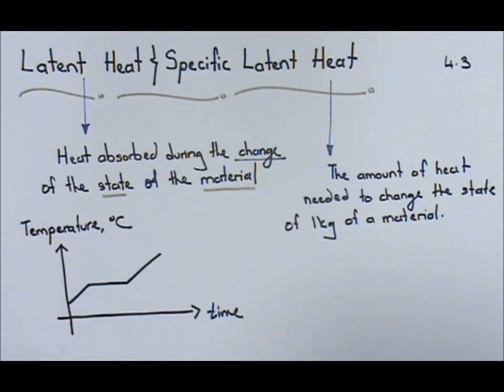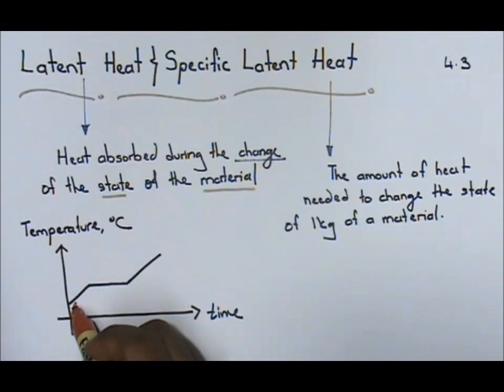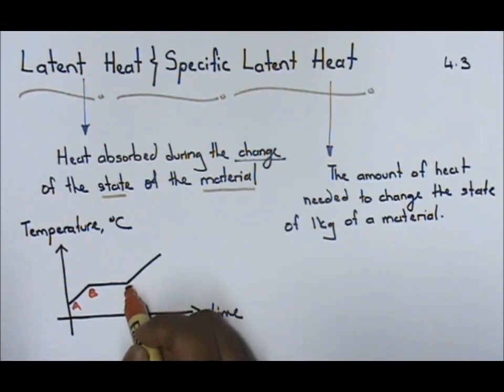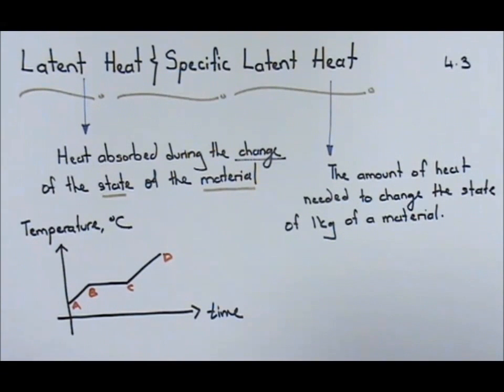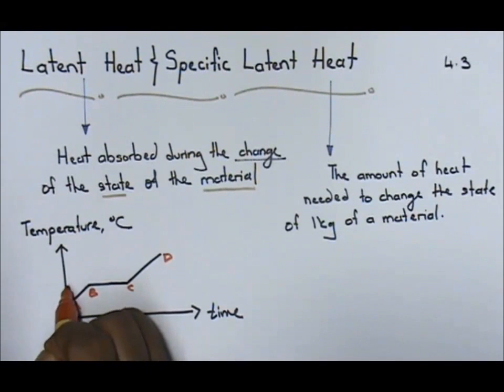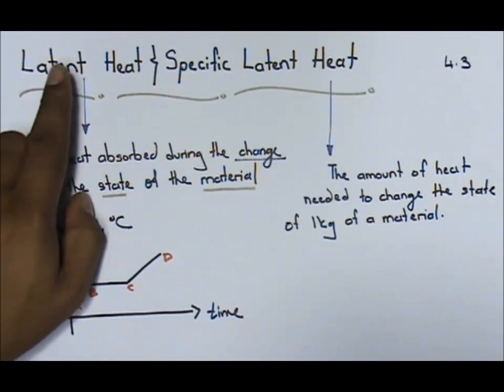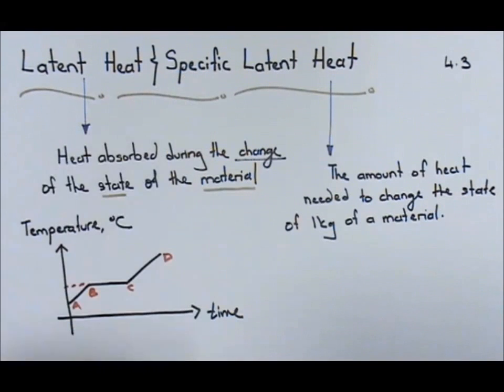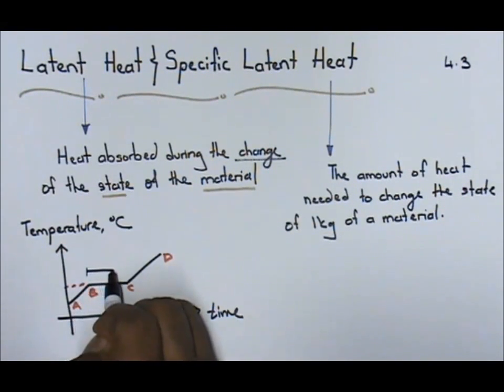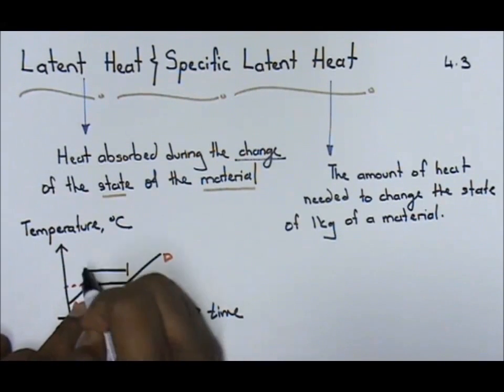I want to take your attention to a few points. Let's label this as A, B, C, and D. We understand that point A to point B is where the temperature increases. From B to C, you can clearly see that the temperature does not increase. When I'm asking you what is latent heat or specific latent heat, it refers to this point.